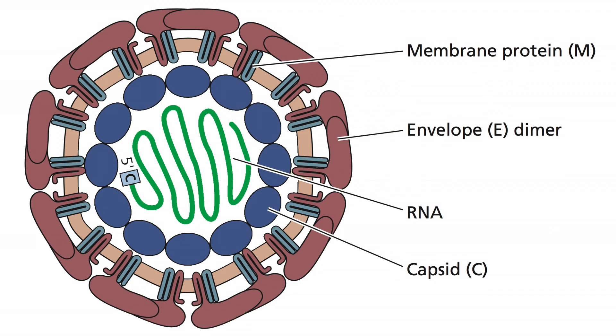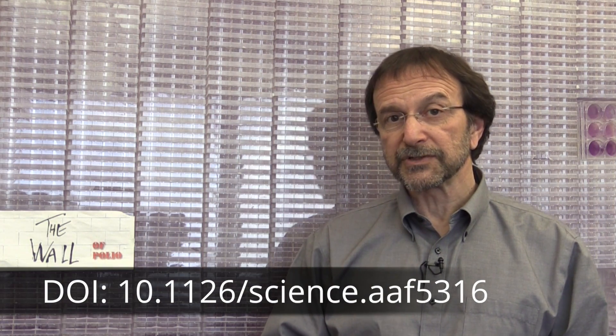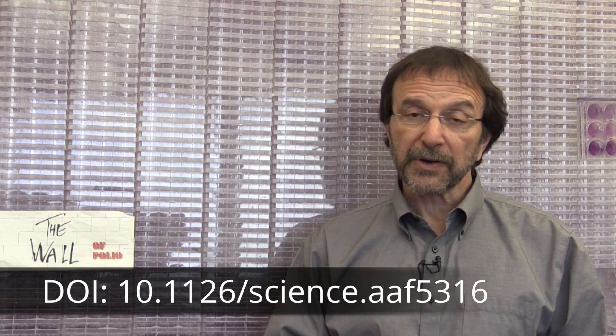Here is our complete Zika virus with all the components labeled: the viral RNA, the capsid, and the E and M proteins in the membrane. Recently, a group at Purdue University determined the high-resolution structure of the Zika virus particle. Having a high-resolution structure means that we can see exactly where every atom is located in three-dimensional space. So far we've been looking at a cartoon of the Zika virus particle in two dimensions. Now I'll show you a three-dimensional view so that you can see the beautiful architecture of a virus particle.